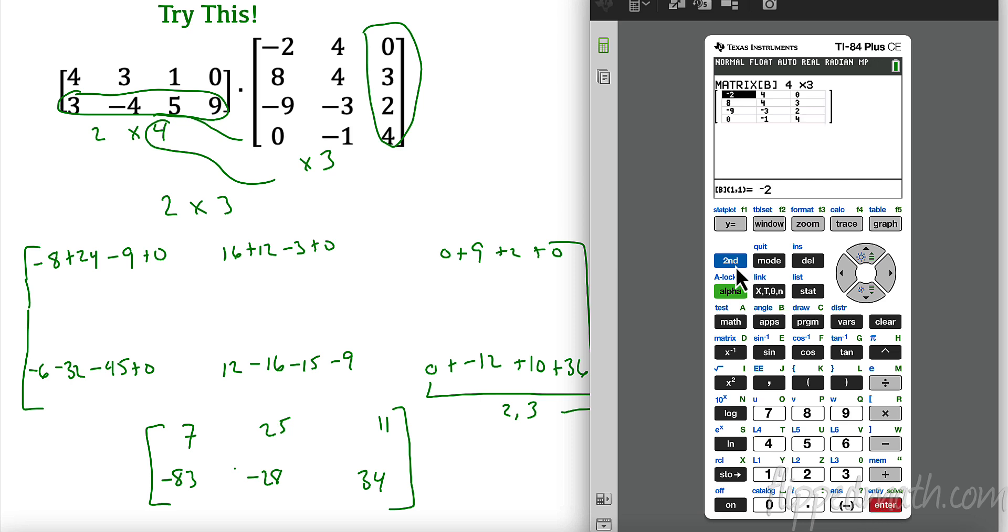All right. So now we have them. Once you have them both in there, quick tip, you have to quit. Okay. Then you have to go back in. So I'm going to use, and I'm going to multiply matrix A, second matrix A times second matrix B. And we will see. Did I make a mistake over here? I bet I did. 7, 25, 11, negative 83, negative 20, 34? I didn't. Hey, way to go. All right. So that is that easy.